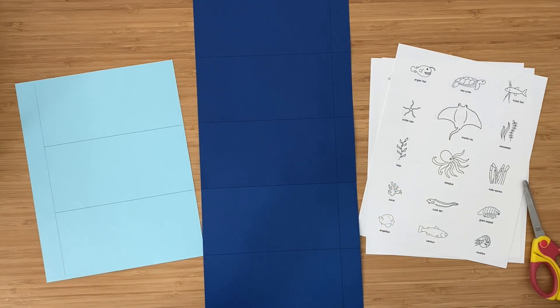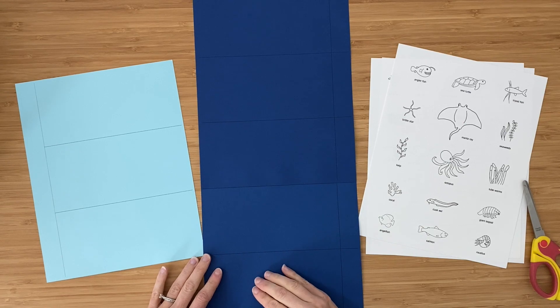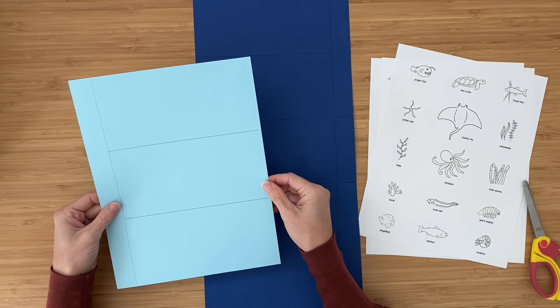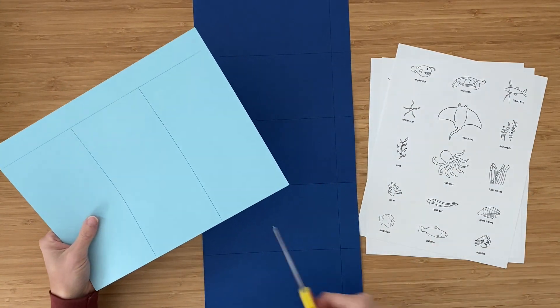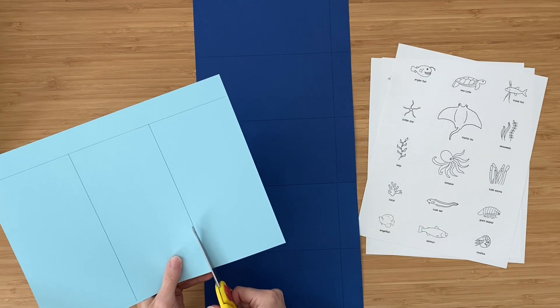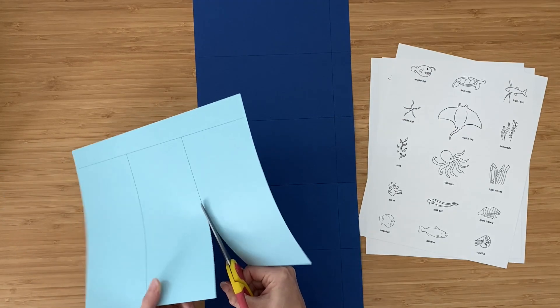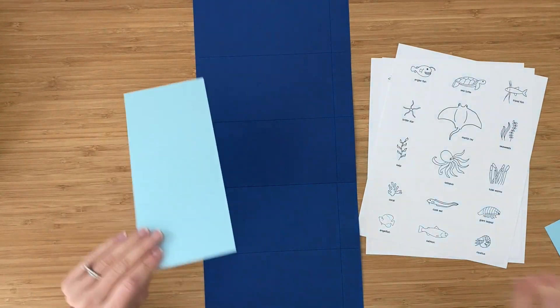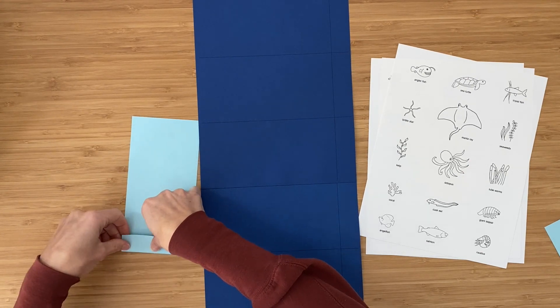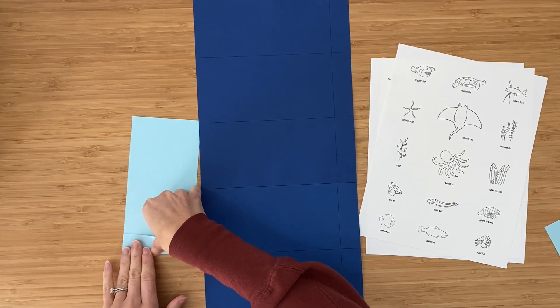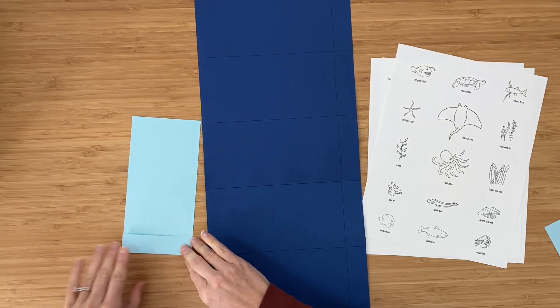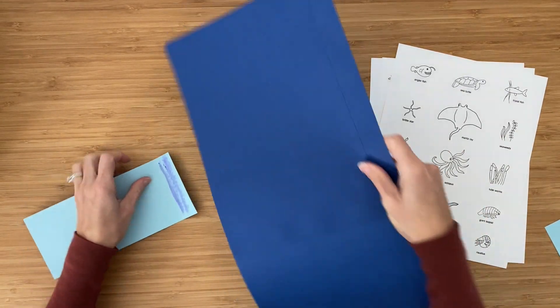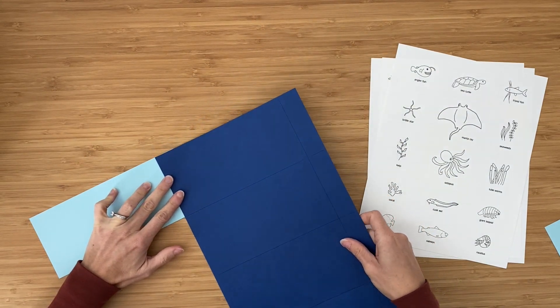I thought it would be fun to show you how to do the different zones in different colors based on how much light gets into that zone. So I printed this page in three different colors. This is going to be the top zone that receives the most light, so again cut on the black dashed line, and then you will fold on the gray dotted line.